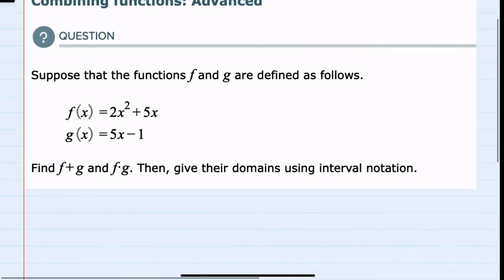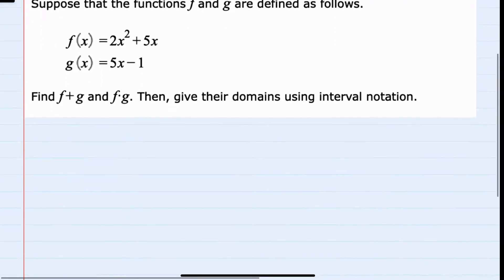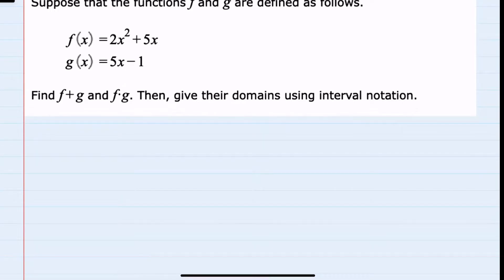We're given two functions here, f of x and g of x, and we're asked to find f plus g and f times g, and also to give their domains in interval notation.